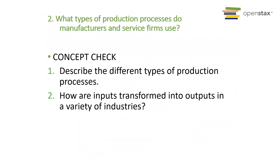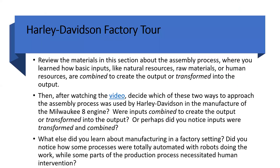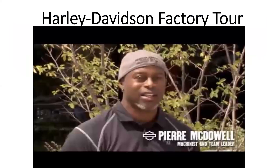In section two, the question asks: what types of production processes do manufacturers and service firms use? Based on this question and the concept checks, remember to go over these questions in the book. Think about what your process would be in your own business — whether that would be a manufacturing-type business or a service-oriented business. Here's a video on the next slide related to Harley Davidson and the factory. This is a pretty interesting case study.